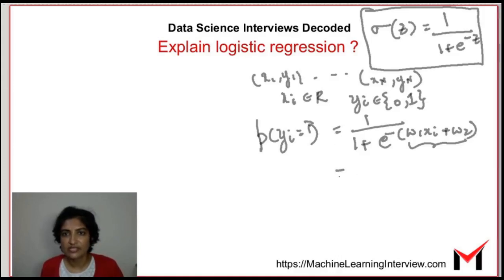Now I can write this in vector form as 1 by 1 plus e power minus w transpose xi where this is the vector xi with xi comma 1 and this is the vector w with w1 and w2 as the components. And I can also of course write this as sigmoid of w transpose xi.